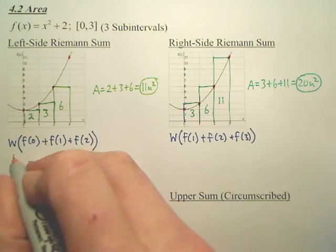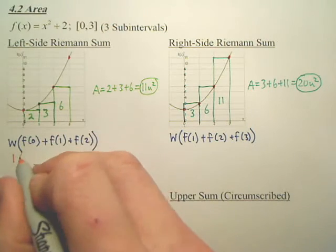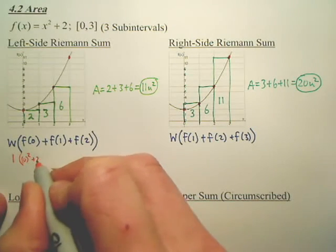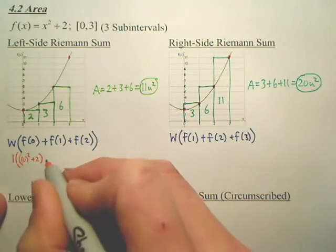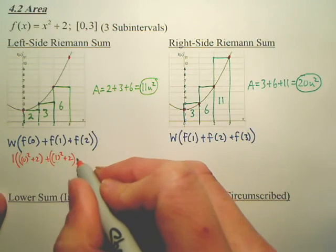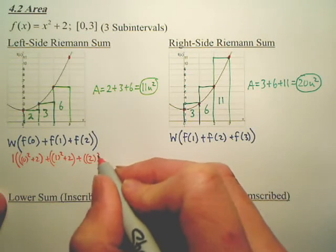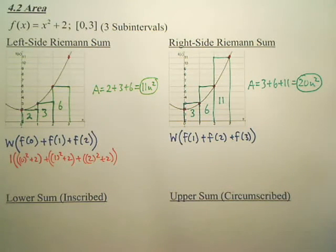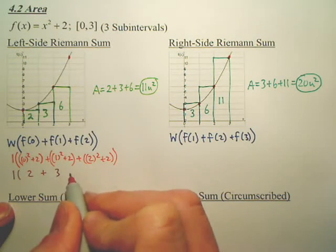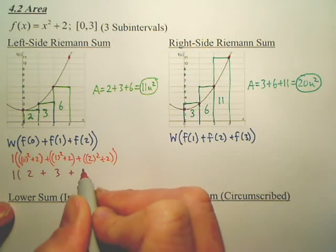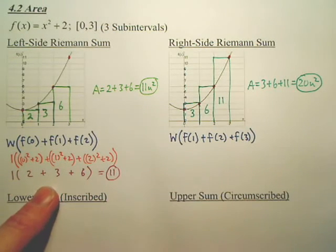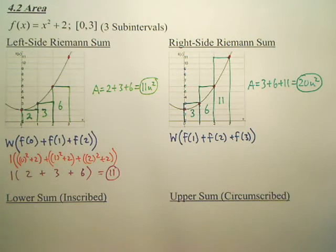Meaning, if we did this one in particular, isn't this a 1 width? And what was f of 0? Well, if you plug in 0, what do you get? Well, 0 squared plus 2, and here you do 1 squared plus 2, and then plus, you'd have 2 squared plus 1 squared plus 2, wouldn't that be 1 times 2 plus 3 plus 6? Is that the same as this? Same answer? Yeah.